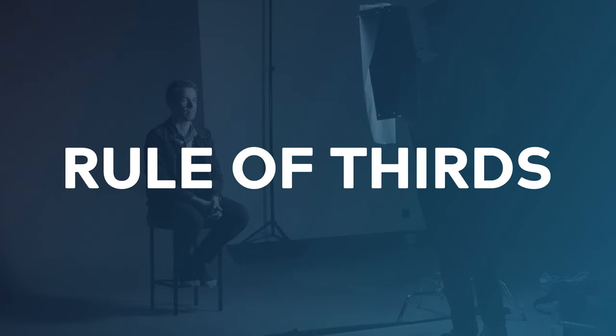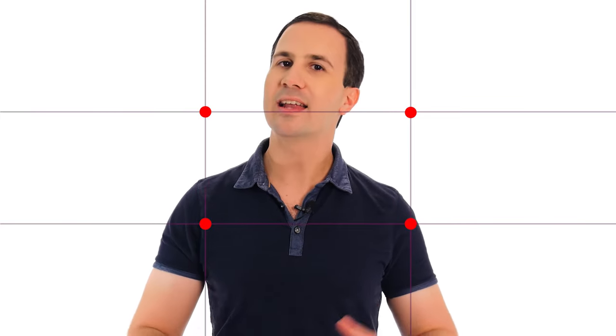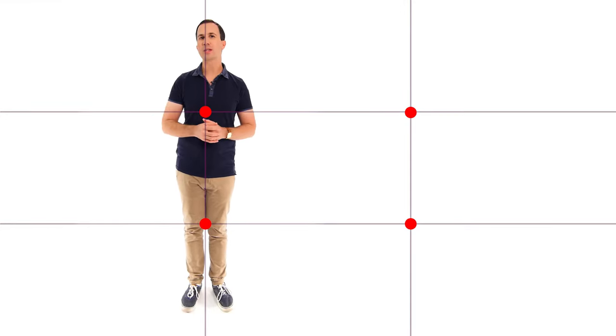To work out approximately how much headroom to use, we need to have an understanding of a compositional rule known as the rule of thirds. I'm going to be doing an entire video on this subject, so make sure you're subscribed if you'd like to see that one. But let me give you the hard and fast version. The rule of thirds suggests that you should mentally divide your frame into thirds both horizontally and vertically. The idea is that you place the most important visual elements on those third lines, and in particular on the intersect points where those lines meet. The theory is that these points are the most visually interesting points for a viewer.